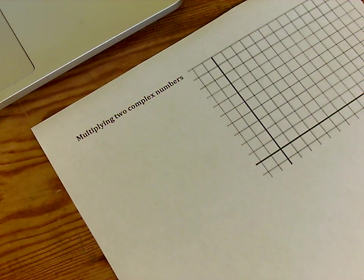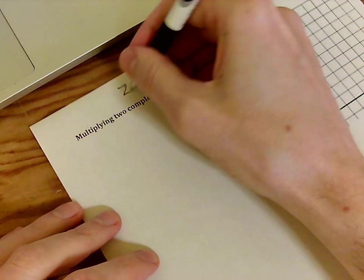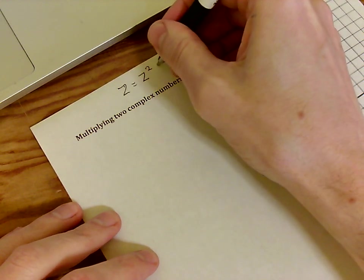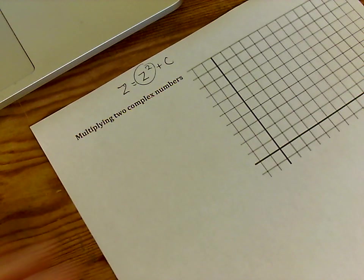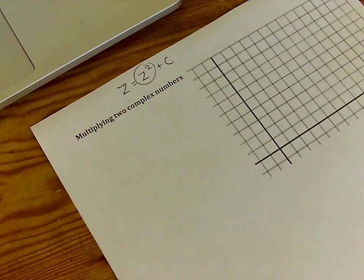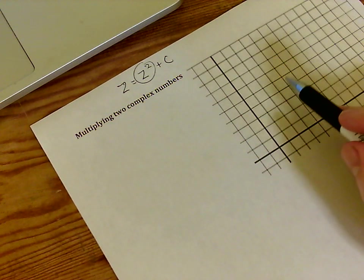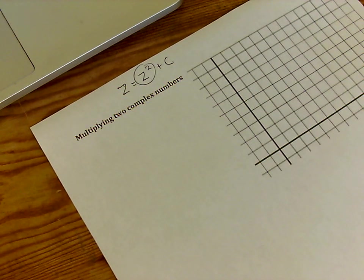By now you've read that the Mandelbrot set involves the formula z equals z squared plus c. Now squaring is multiplication, so we're going to need to learn how to multiply two complex numbers. In this lesson, we'll learn how to do that and what the result looks like geometrically. And the picture that's going to result from that is, in my opinion, one of the coolest theorems in all of mathematics.